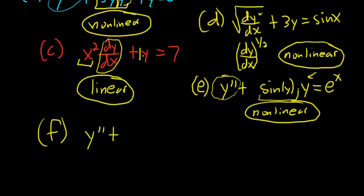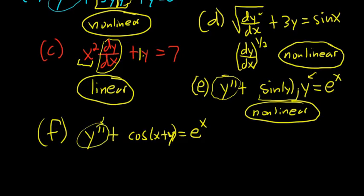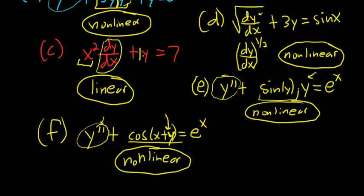Example F: y'' + cos(x + y) = e^x. The order is 2. This is non-linear — you cannot have cos(x + y) because y is inside a cosine function. Y and all of its derivatives have to be to the first power and cannot appear inside other functions. So this is non-linear.